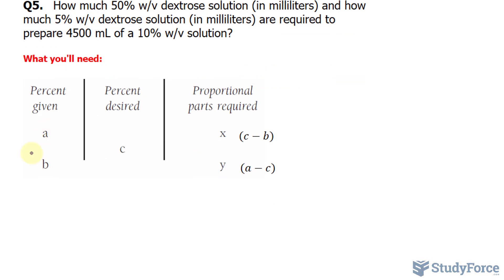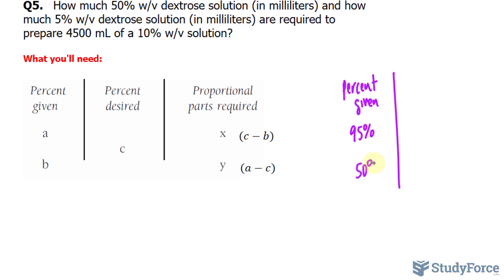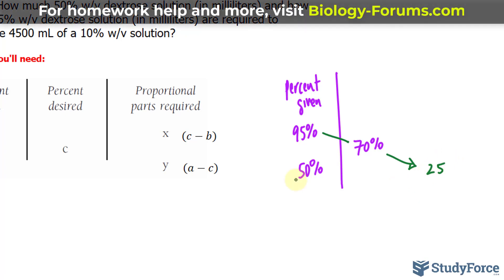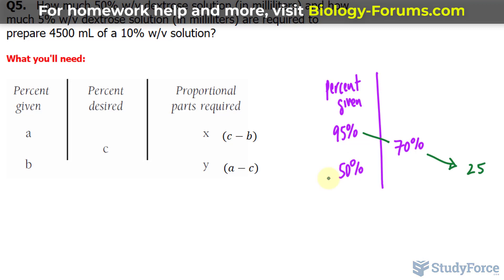Question number one reads: in what proportion should alcohols of 95% and 50% strengths be mixed to make 70% alcohol? In place of A, one of the percents given is 95%, so I'll write down 95% and create the chart. The other solution is 50%, and what we are looking to achieve is 70% alcohol. First, subtract 70 from 95 — you get 25 — and that value comes over here. So 95 minus 70 is 25.